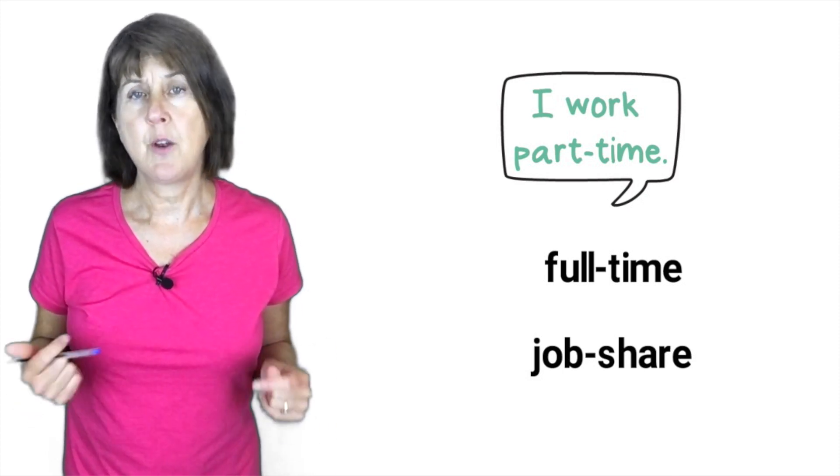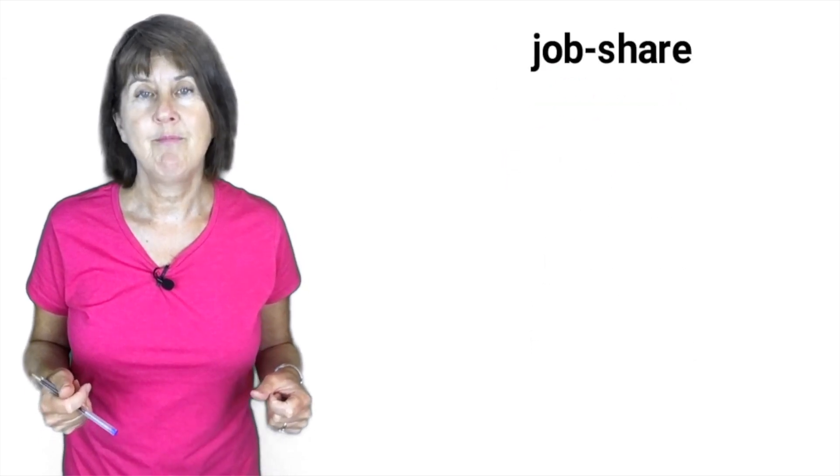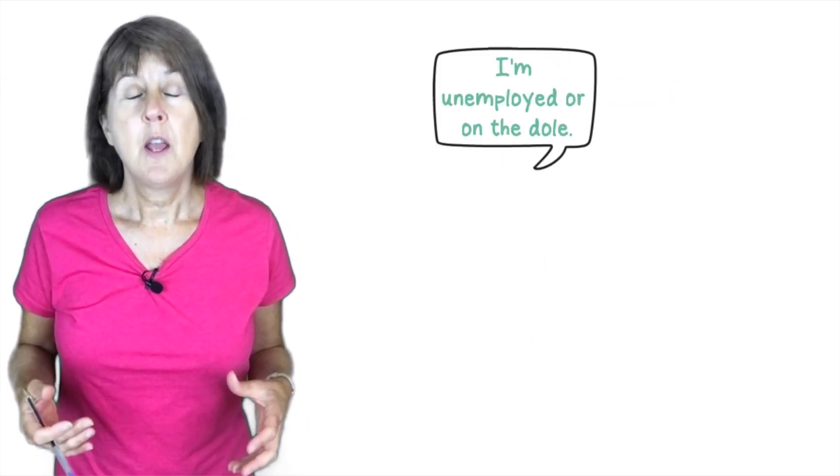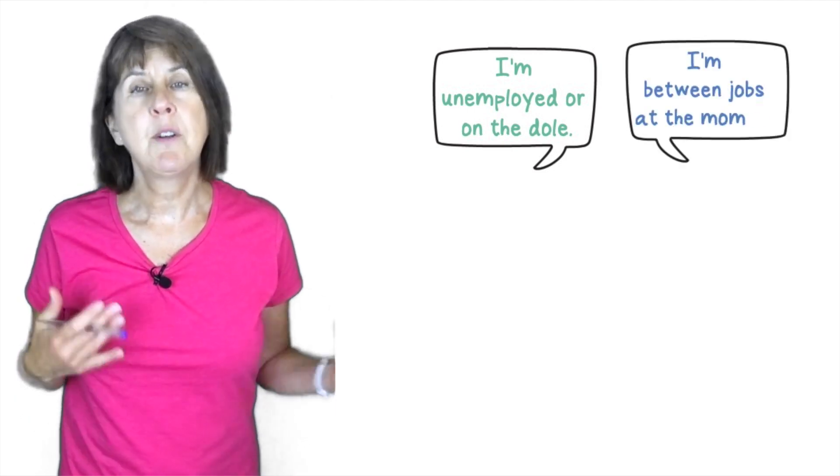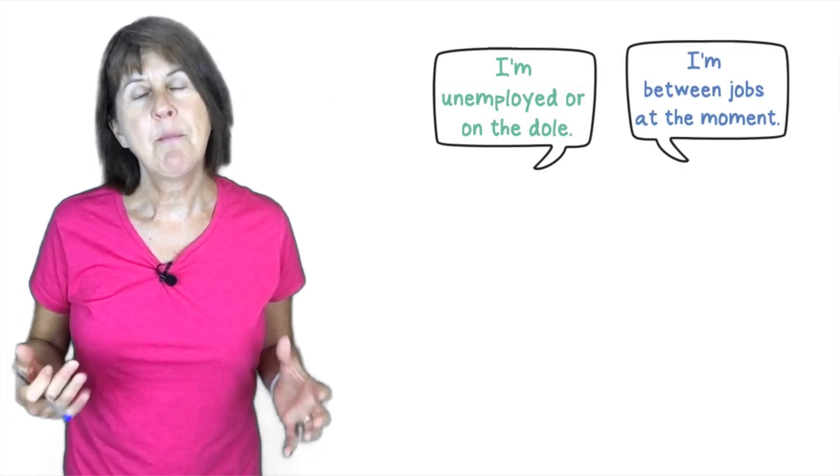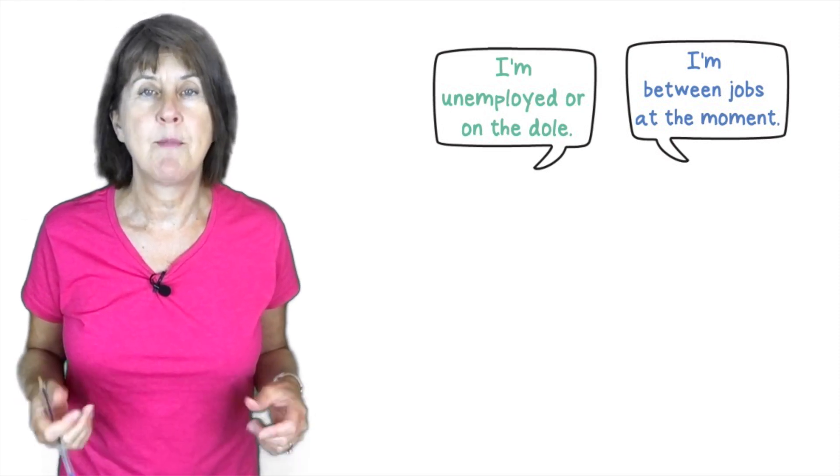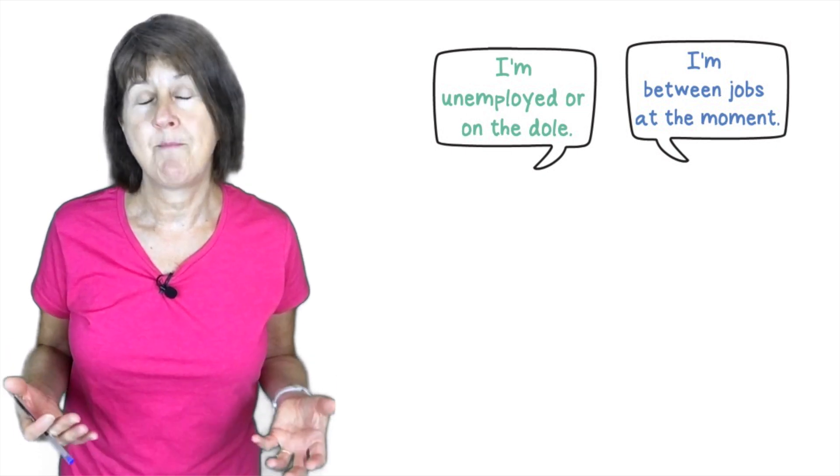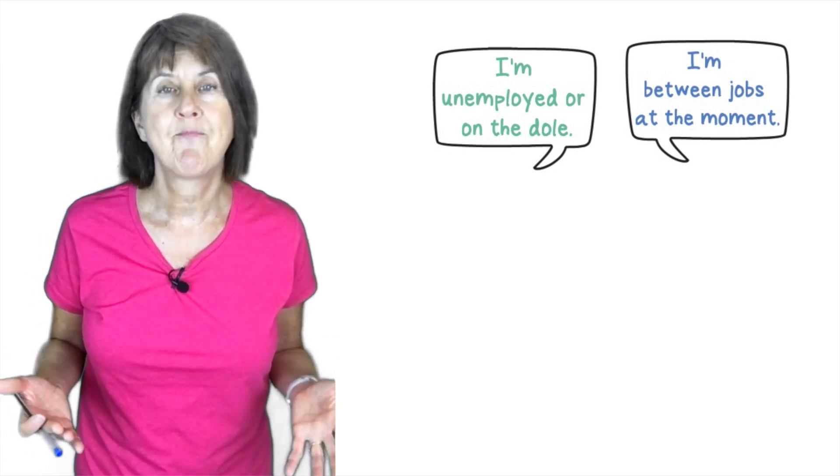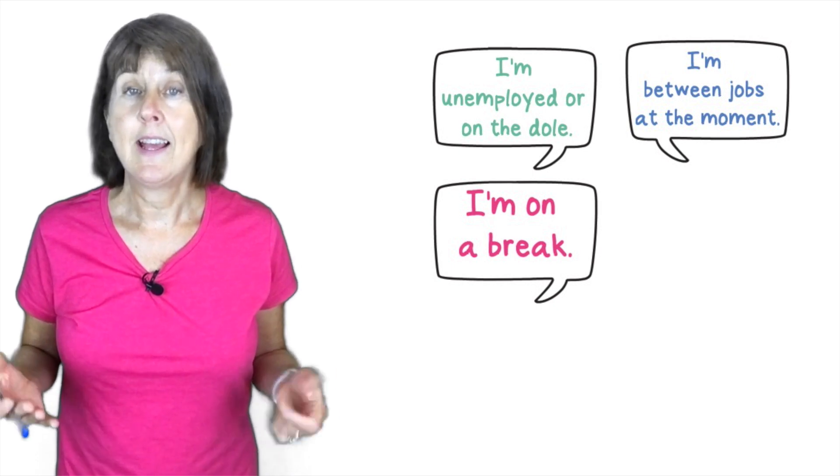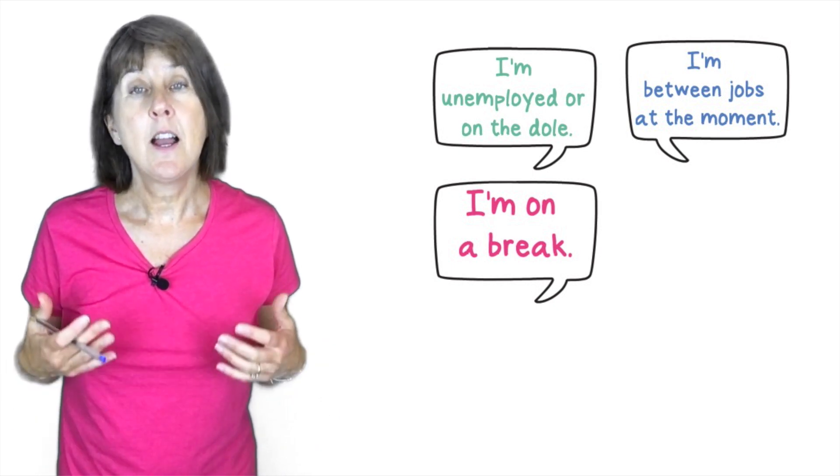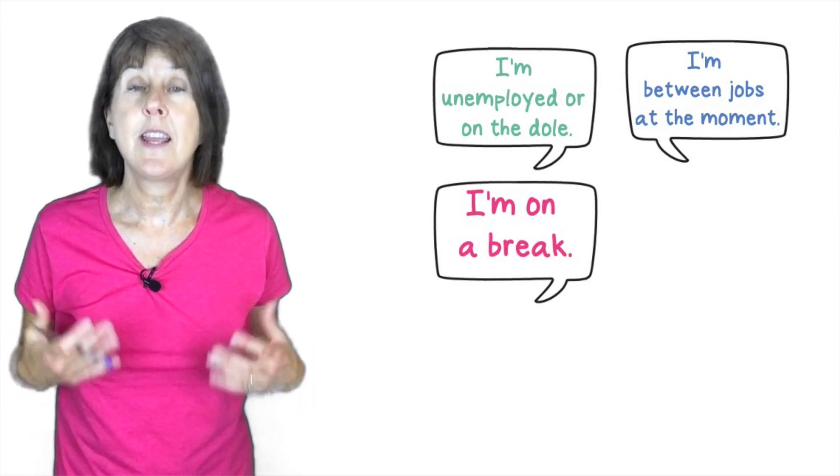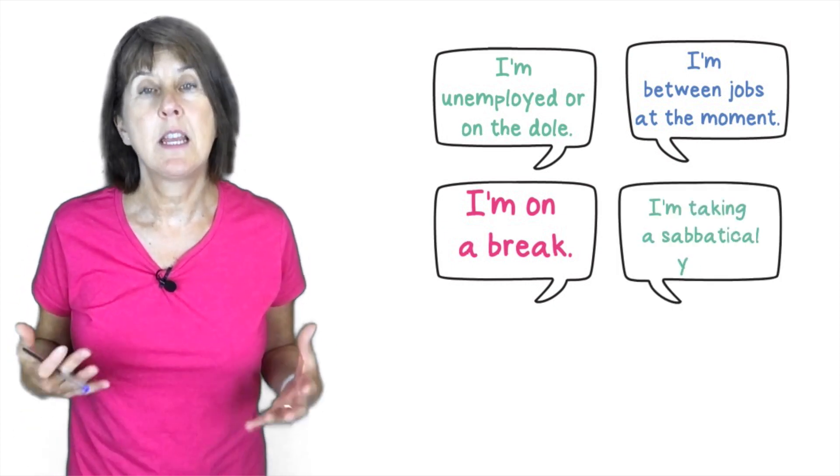So what about if you don't have a job? If you're out of work? You could say I'm unemployed or on the dole, but it's often better to say something like I'm between jobs at the moment, which implies that it's a short-term situation, whereas unemployed is more something that maybe is more long-term, so maybe more negative. Or I am on a break. Or maybe you're taking a year off and then returning to the same company. This we call taking a sabbatical year. I'm taking a sabbatical.